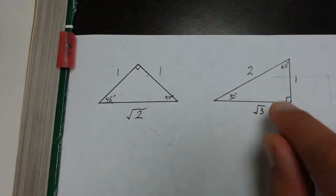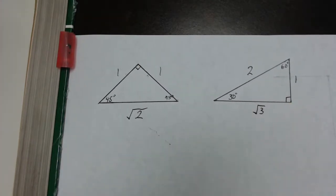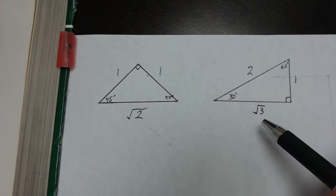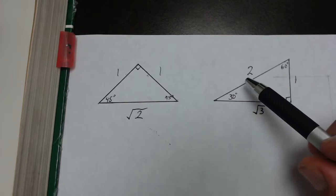The second reference triangle is called the 30-60-90 because it has sides of 30 degrees, 60 degrees, and 90 degrees. The short leg is always going to be 1, the long leg will be the square root of 3, and the hypotenuse will be 2.